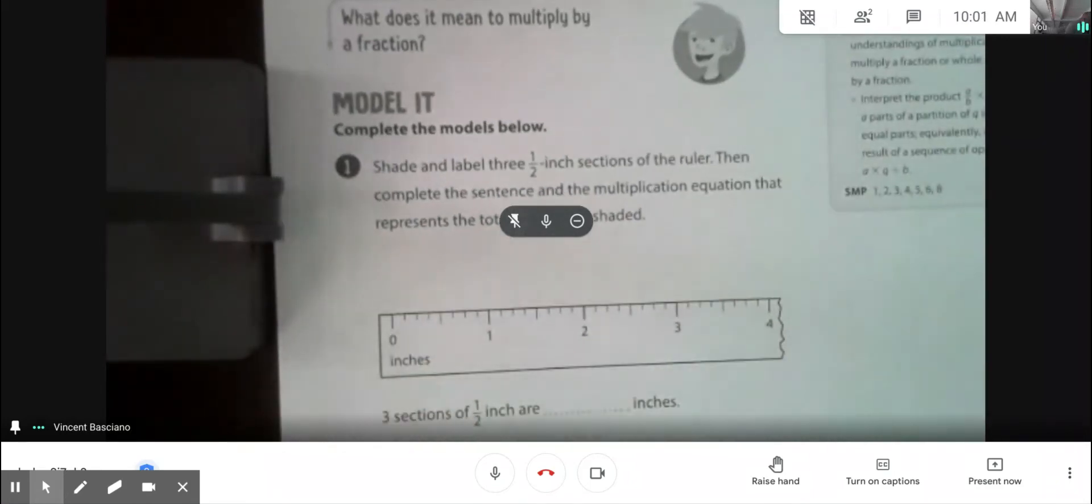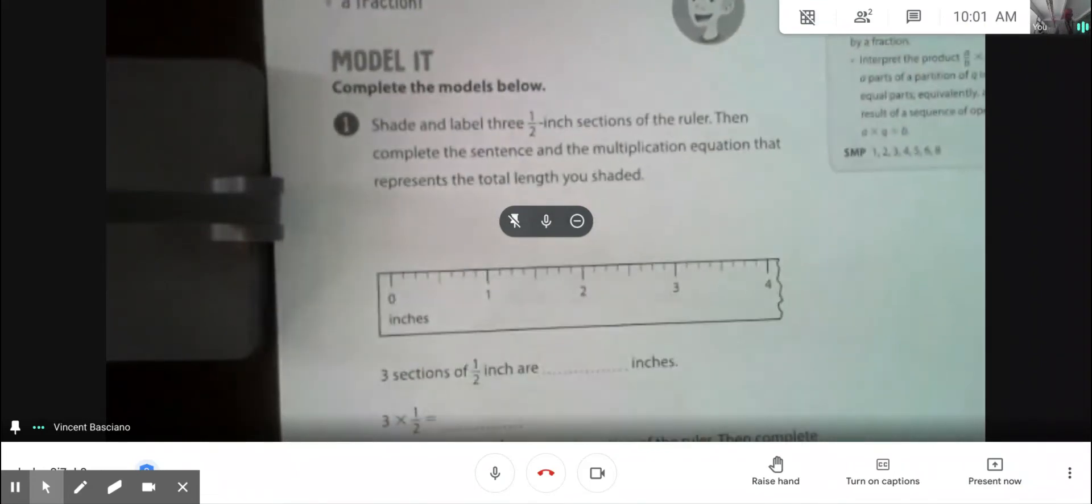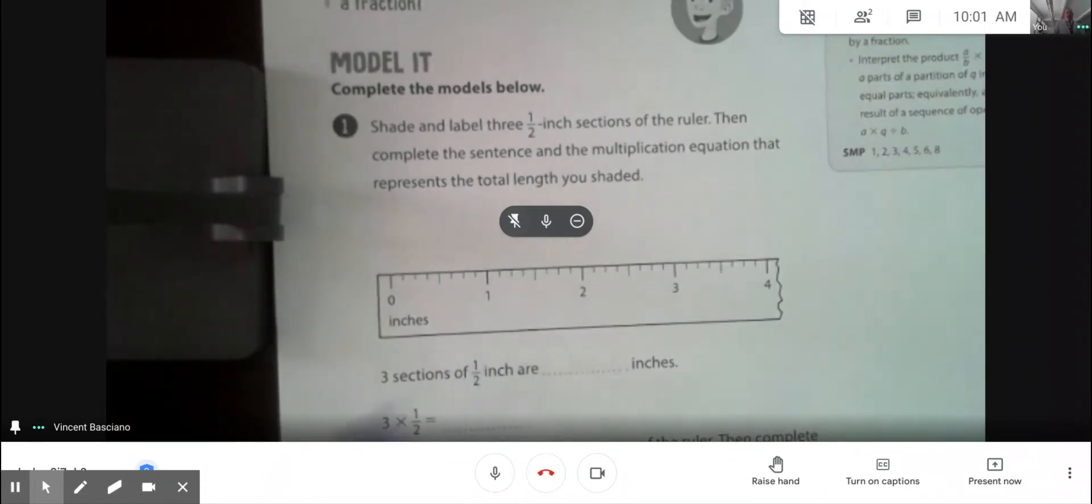All right, so what we're going to do right here is we are going to solve this today. So this is multiplying fractions with the number line, okay? And our basic real-life application of a number line is a ruler. You can see the ruler right here. A ruler is a number line. This one starts at zero and it gets cut off at four inches. So it's a number line from zero to four, all right?